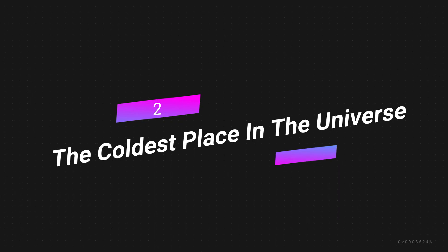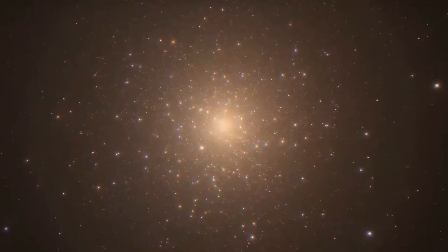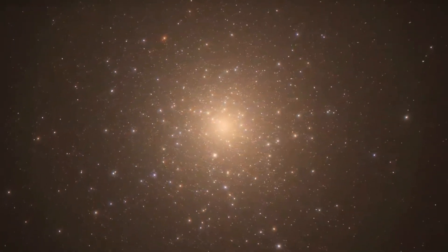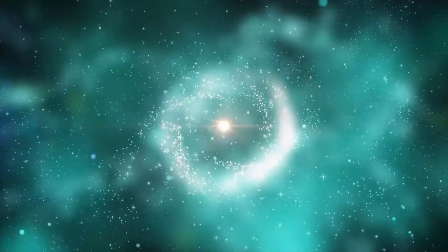Number 2: The Coldest Place in the Universe. The sky is pretty cold because only a small part of it is warmed by the heat of stars. We know it's cold outside, but we don't know how cold it can get.